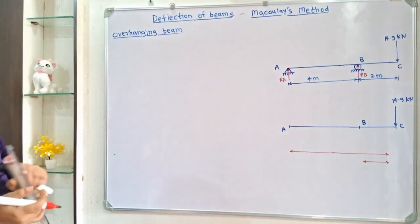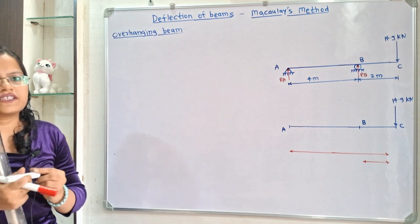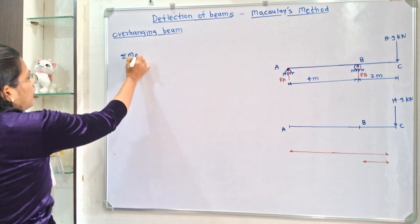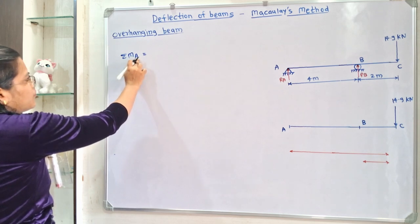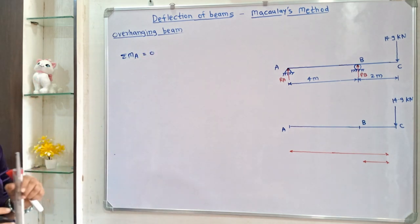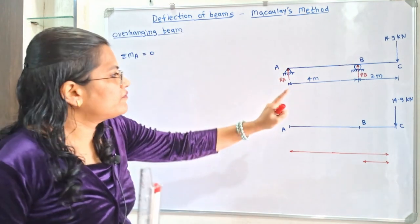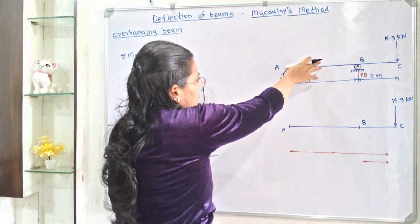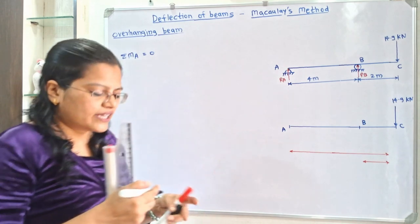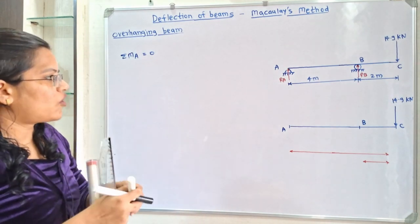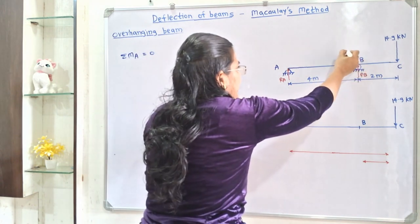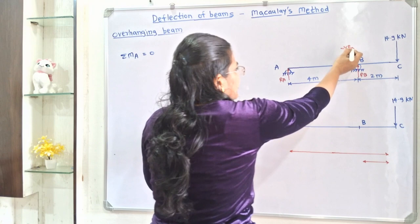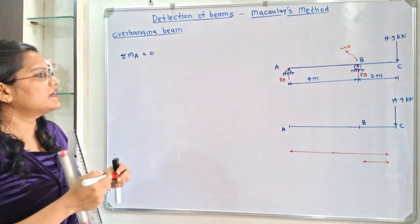From the diagram, we will take the summation of moments of all the forces about point A equal to 0. Now if we observe the load RB, it is acting in the upward direction. If we move the compass about point A in the upward direction, then the direction is anticlockwise, and we will consider a negative sign for anticlockwise direction.